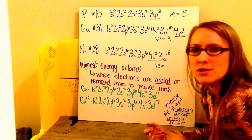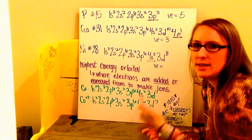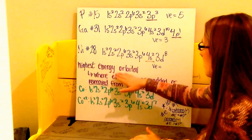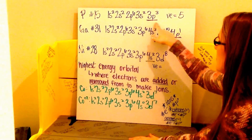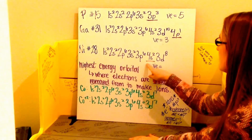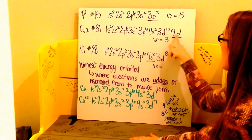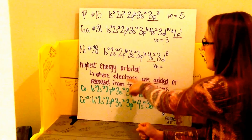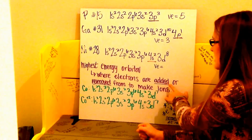Now, not only can we have the highest energy level, but within that we can have our highest energy orbital. Remember that my energy orbitals go from S to P to D and then to F being the highest. I located my highest energy orbital for each of my previous examples. The highest energy orbital for phosphorus is 3p, for gallium is 4p, and for nickel is 4s. In gallium, after 4p would come 4s and then 3d as they go in order of orbital and then energy level. This highest energy orbital is where electrons can be added or removed from to make ions.